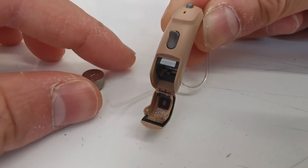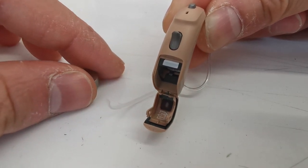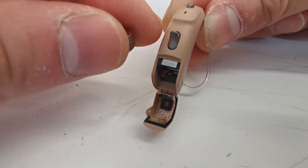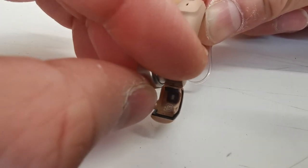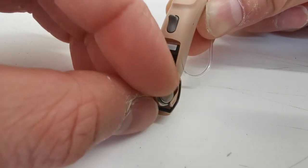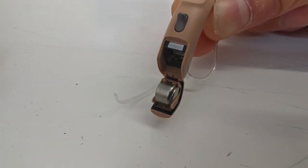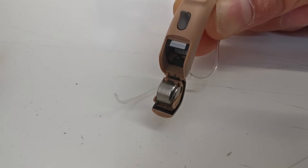It is important when you have the hearing aid held in front of you in this orientation to put the battery in with the flat side to the left, like so. You'll see it slides in easily.